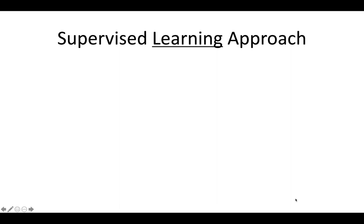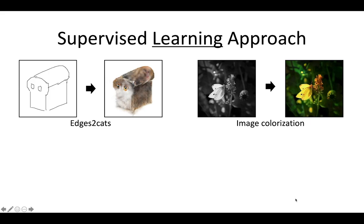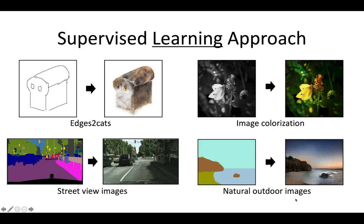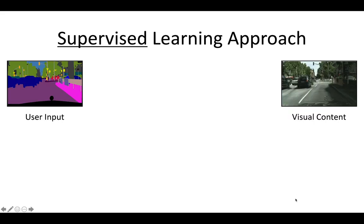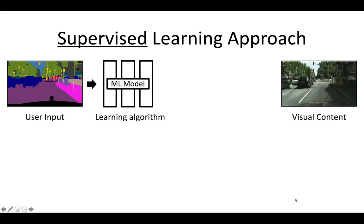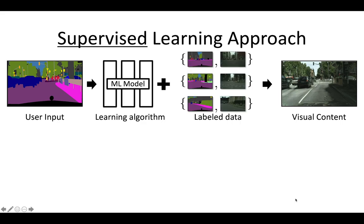Let me recap. The good news is that the above approaches are learning-based methods, so the same learning method can generalize well across different tasks and datasets, helping people create different visual content. The bad news is that this kind of method requires lots of supervision — to learn a model, we need tens of thousands or millions of input-output pairs. These pairs can sometimes be simulated, but they are often quite expensive to collect.